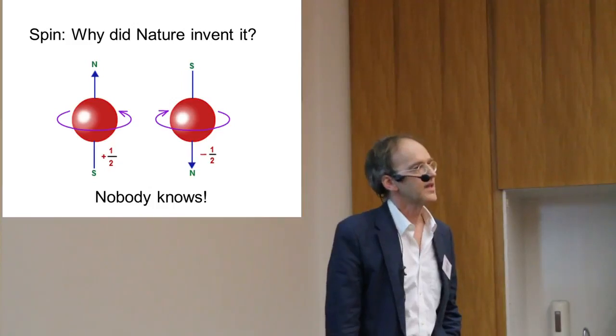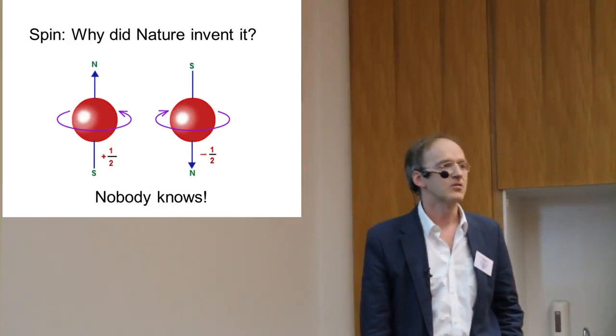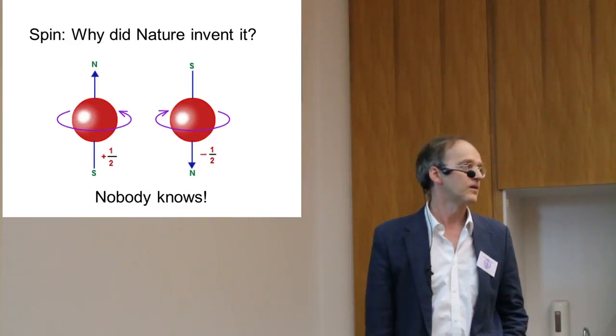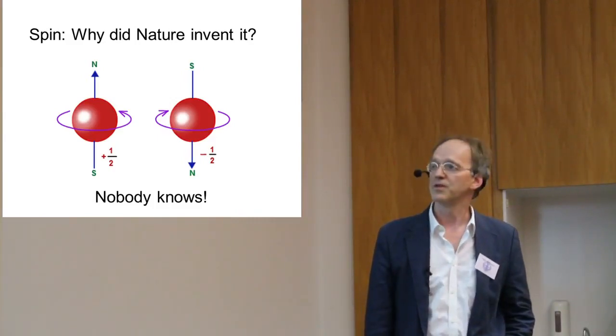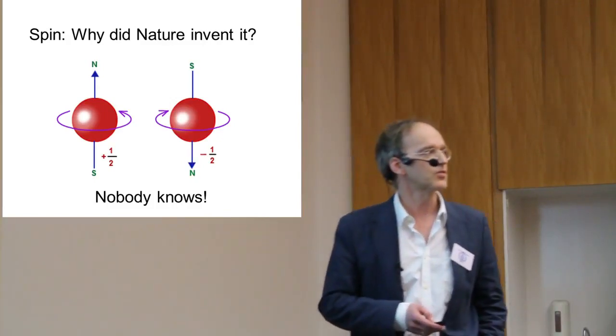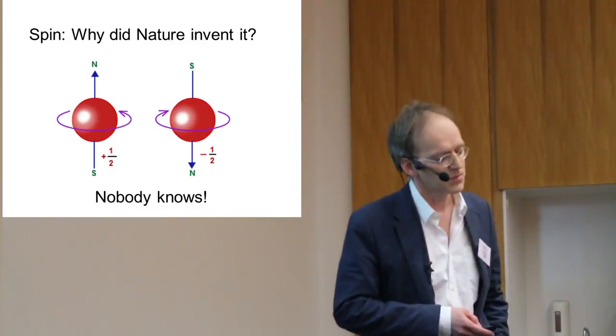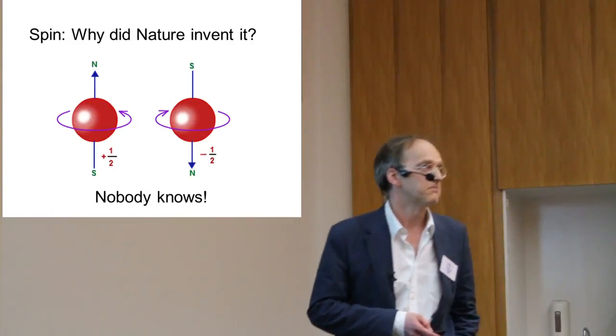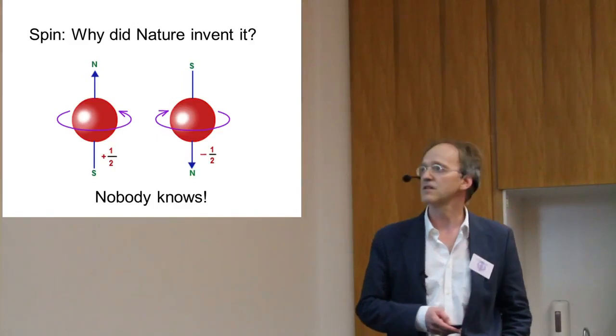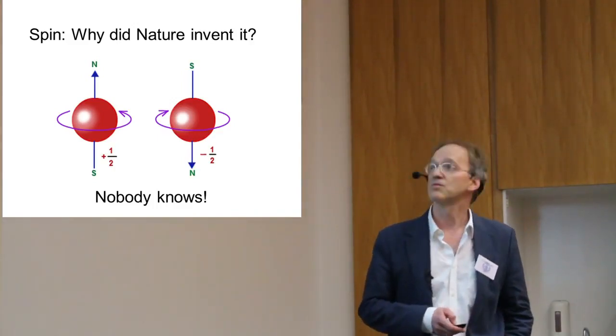So if you don't understand the deeper reason of spin, obviously we do not understand the deeper reason of why we have fermions and bosons. And that's kind of strange, postulating a symmetry between these particles because there might be a good reason why nature has chosen that there is no symmetry.